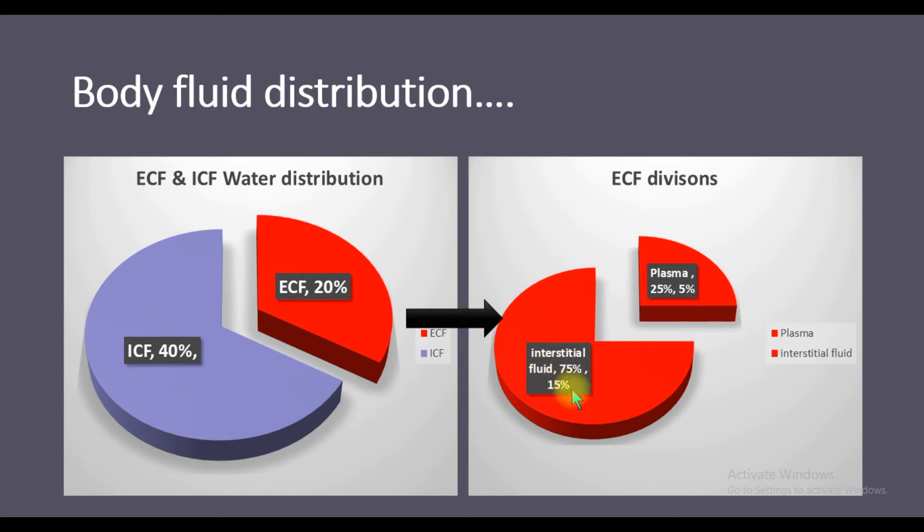Whereas plasma is the fractional amount, 25% of the 20% ECF. So 75% of ECF is interstitial fluid and 5% of ECF is plasma, which is 5% of total body weight. The interstitial fluid is 15% of total body weight.